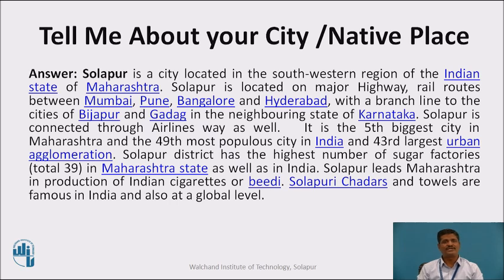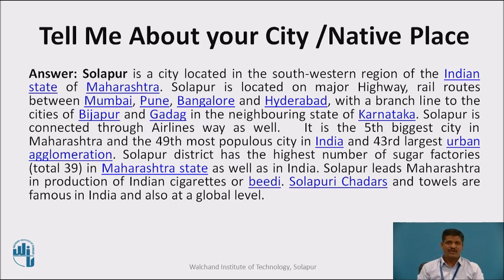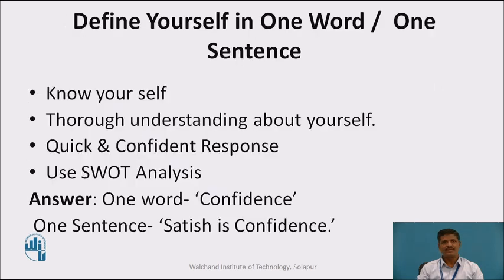Here is one model answer: Sholapur is a city located in the southwestern region of the Indian state of Maharashtra. It is located on major highway and rail routes between Mumbai, Pune, Bangalore, and Hyderabad, with a branch line to Bijapur and Gadag in the neighboring state of Karnataka. Sholapur is connected through airlines as well. It is the fifth biggest city in Maharashtra and the 49th most populous city in India. Sholapur district has the highest number of sugar factories — 39 in total — in Maharashtra and India. Sholapur leads Maharashtra in production of Indian cigarettes or bidi. Sholapuri chadars and towels are famous in India and globally.